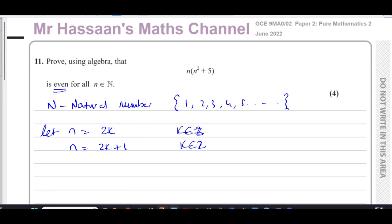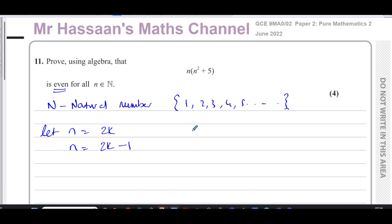We don't really want to include 0, so I'm going to use 2k and 2k minus 1 with k being an element of the natural numbers. So when k is 1, 2k gives 2; k=2 gives 4; k=3 gives 6; k=5 gives 10, and so on — covering all the even natural numbers.